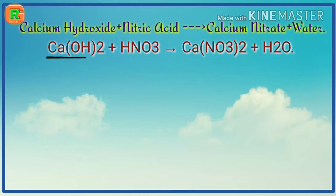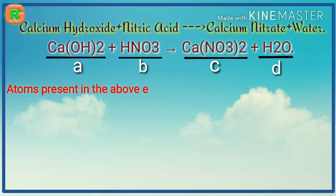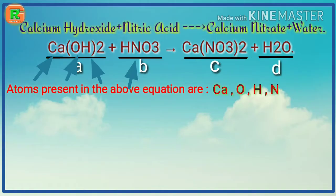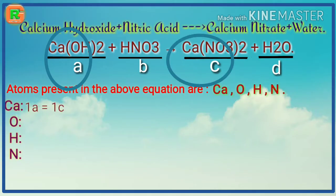Let us assume these four terms as A, B, C, D respectively — that is, Ca(OH)₂ as A, HNO₃ as B, Ca(NO₃)₂ as C, and H₂O as D. Now we identify which atoms are present: calcium, oxygen, hydrogen, and nitrogen. For calcium, there is one atom in A on the left side equal to one atom in C on the right side.